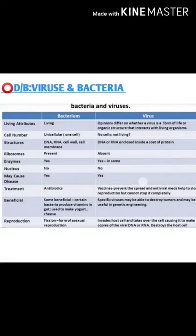Differences between virus and bacteria: Bacteria are living; viruses are non-living. Bacteria are unicellular; viruses are acellular. Bacteria contain both DNA and RNA with a cell membrane present; viruses contain either DNA or RNA enclosed inside a protein coat. Ribosomes are present in bacteria but absent in viruses.